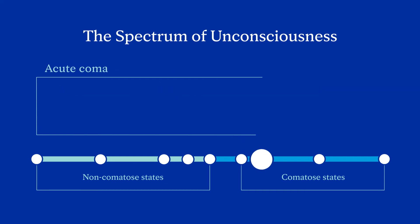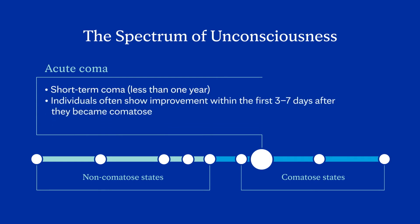Acute coma: an acute coma is a short-term coma, usually meaning less than one year. Individuals often show improvement within the first three to seven days after they became comatose.